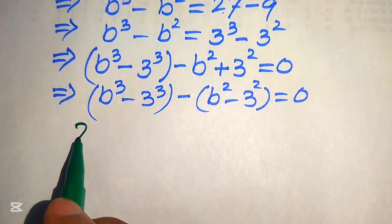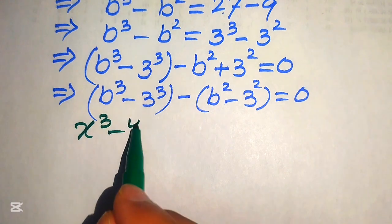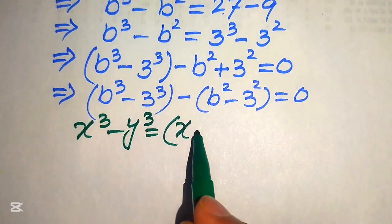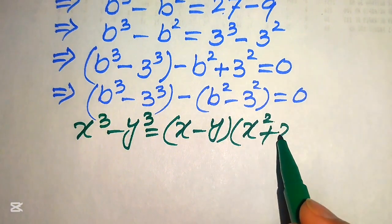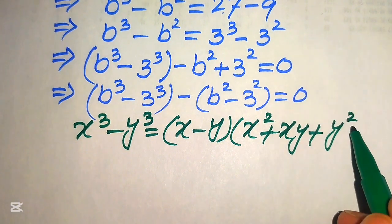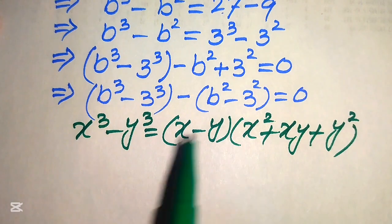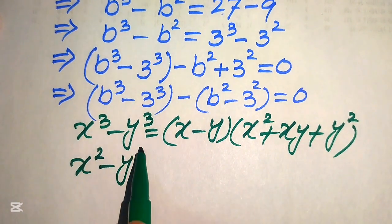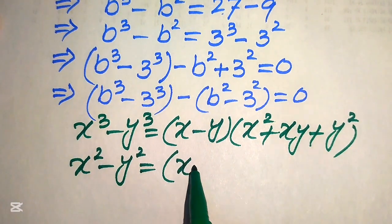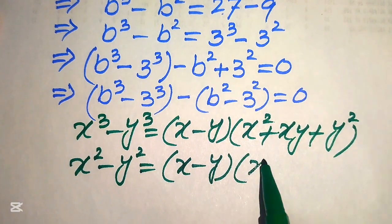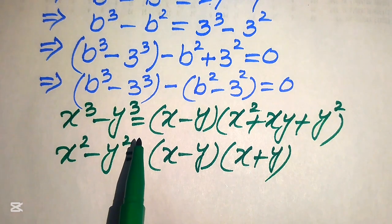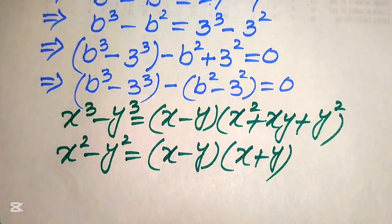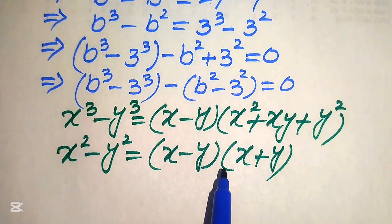For the first factor we use the formula: x cubed minus y cubed equals x minus y, times x squared plus xy plus y squared. For the second factor we use: x squared minus y squared equals x minus y, times x plus y.